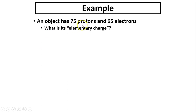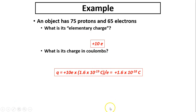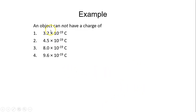Another example: an object has 75 protons and 65 electrons. There are 10 excess protons, so it's positive 10e. In coulombs: 10 times 1.6×10⁻¹⁹. To determine which charge is not possible, the charge must be a multiple of 1.6×10⁻¹⁹ — so whichever answer is not a multiple of 1.6 is the answer; that would be option 2.